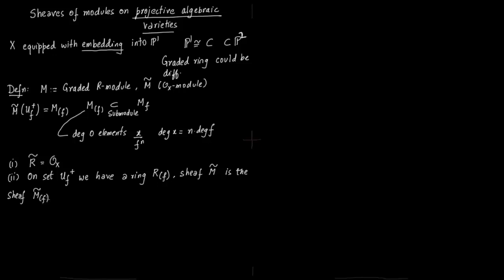And the sheaf M tilde is nothing but this sheaf of degree 0 elements associated with the ring, the corresponding ring. So there is nothing much to say here. It just follows parallelly the case of affine algebraic varieties, except that we use graded rings and graded modules, and we have degree 0 as we had in the projective case.